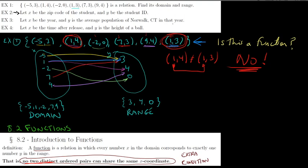In terms of the diagram, the number one has two arrows coming from it - one going to four and one going to three. That means two different y's share the same x, which can't happen for a function. It's a perfectly good relation, but not a function. If we removed the ordered pair one and three, all x's would be distinct and it would be a function. But with both (1,4) and (1,3) included, they share the same x-coordinate, so it fails.